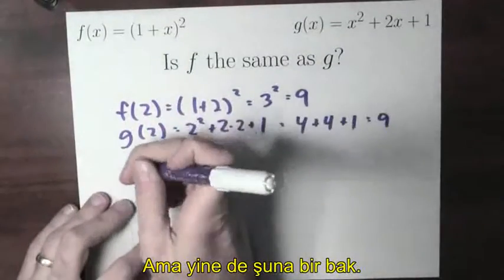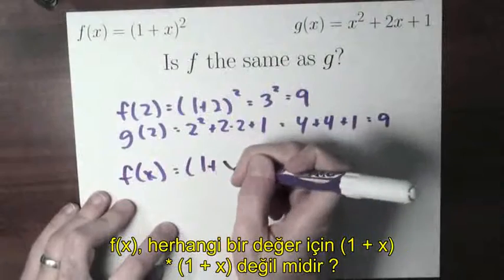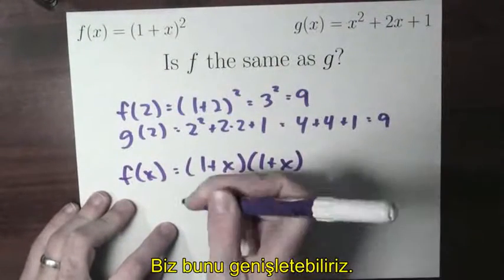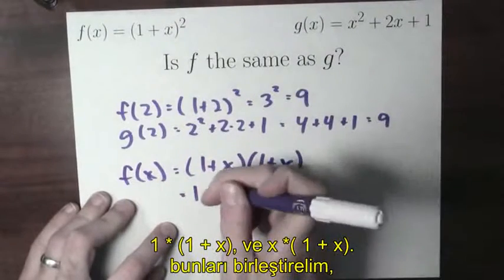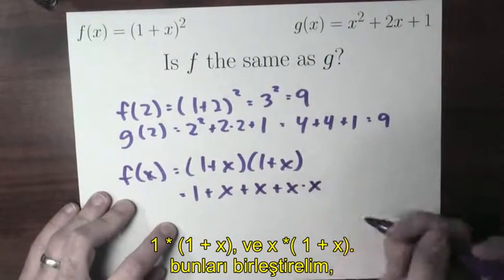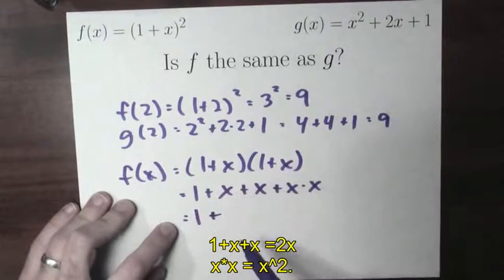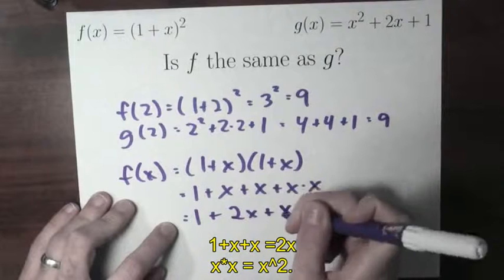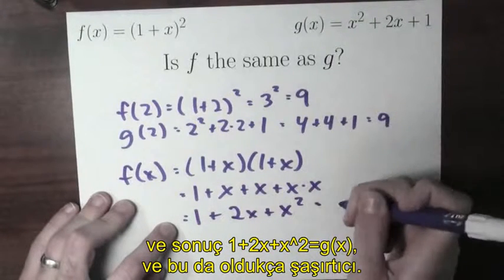And yet, look at this. f of x, for any value of x, is (1 plus x) times (1 plus x) — that's (1 plus x) squared. I could expand this out: 1 times (1 plus x), and then x times (1 plus x). I could combine some of these terms: 1 plus x plus x is 2x, and x times x is x squared. So I get 1 plus 2x plus x squared — that's g of x.